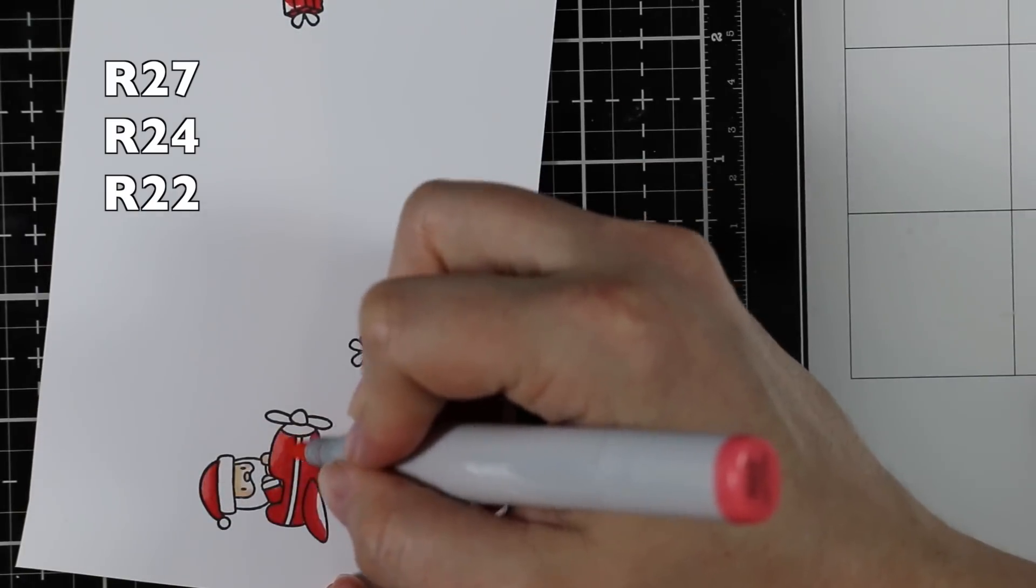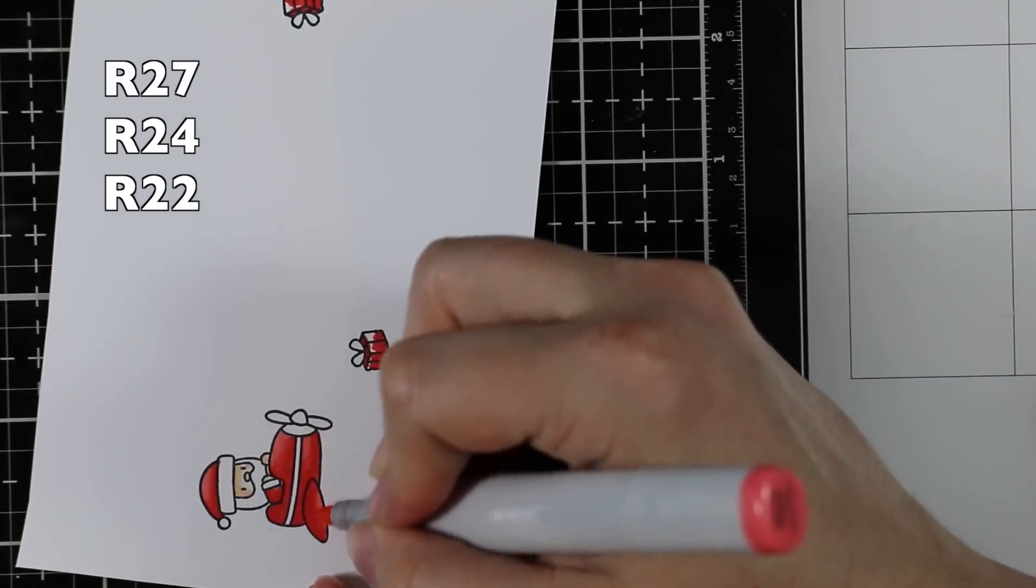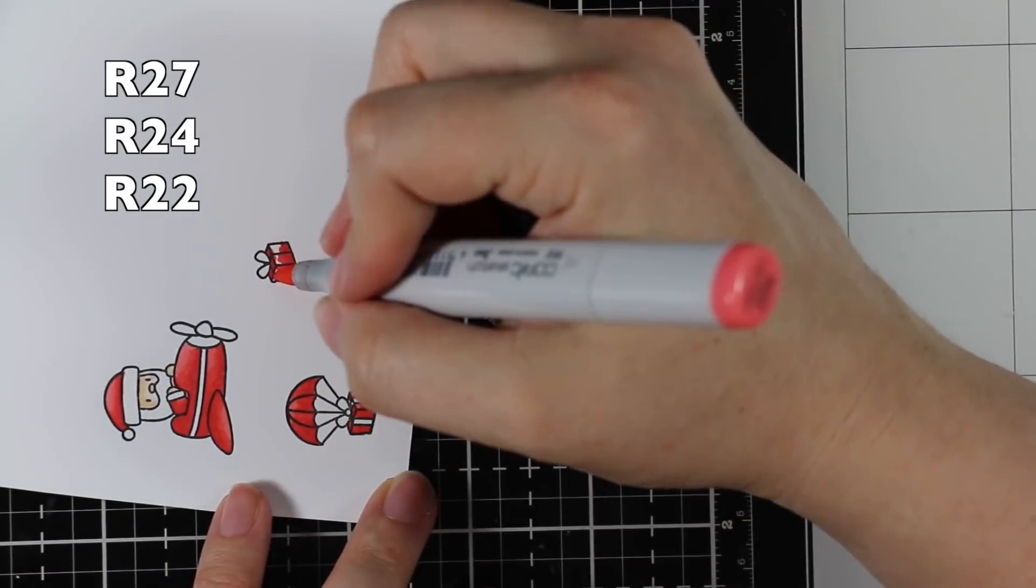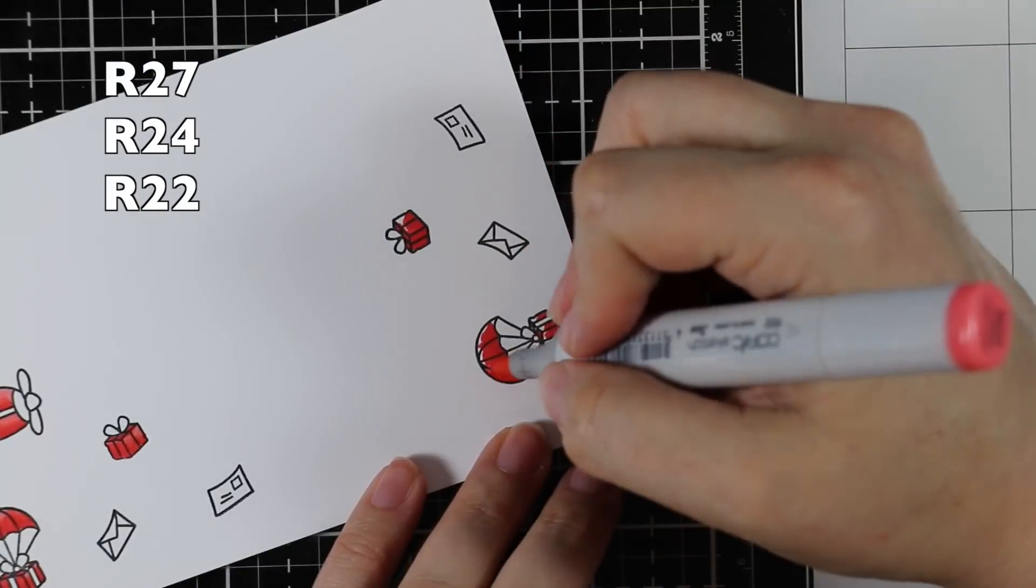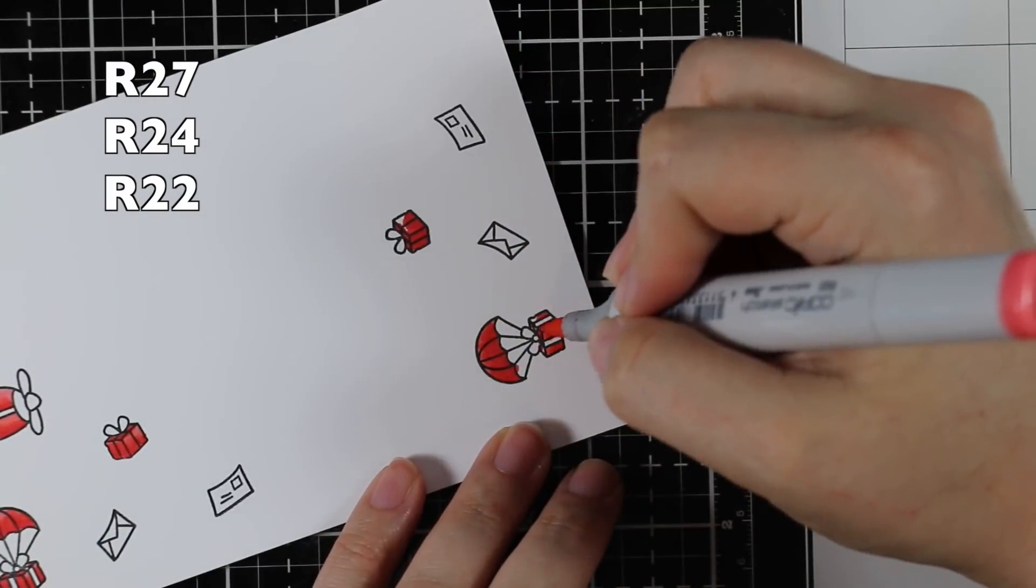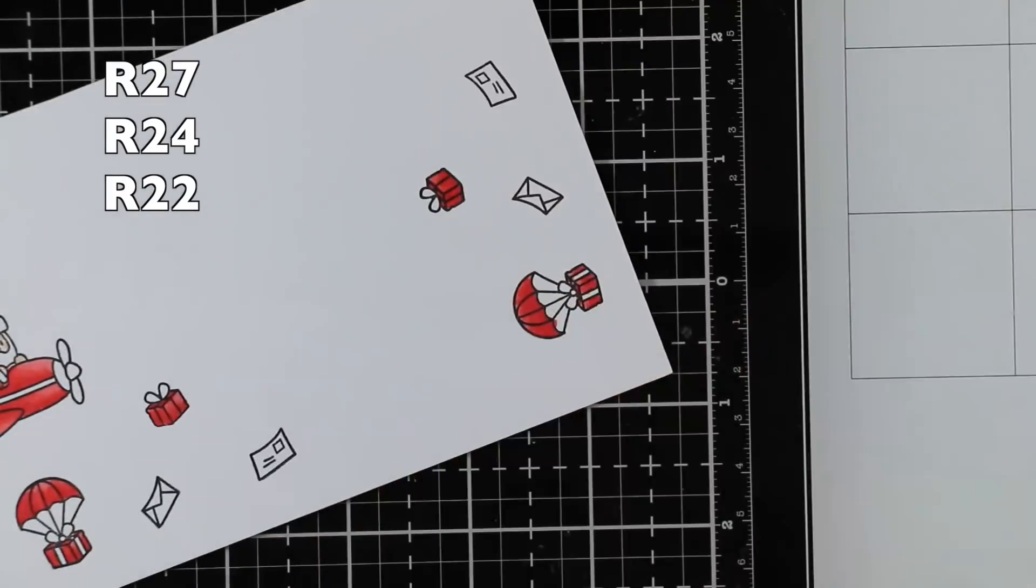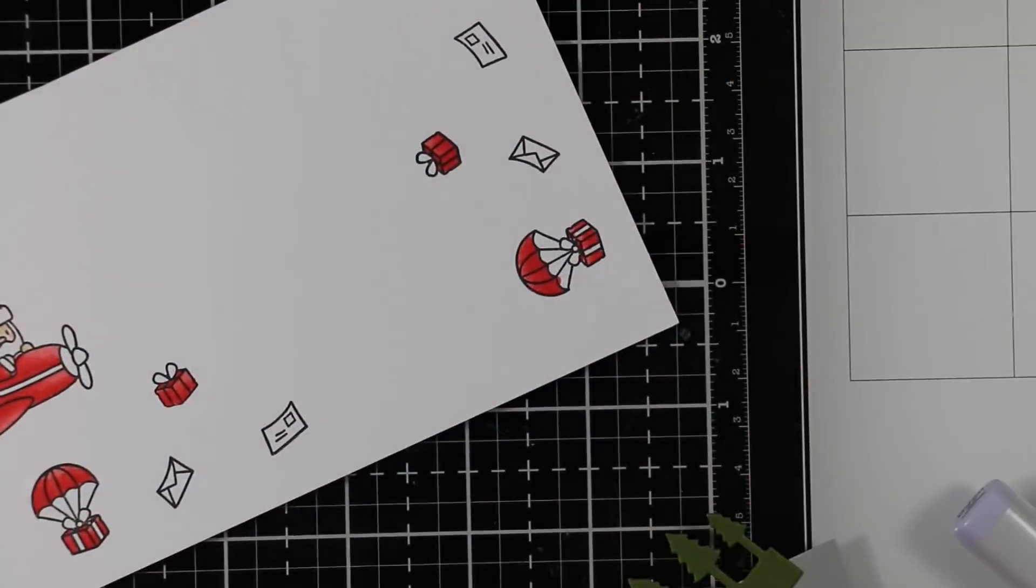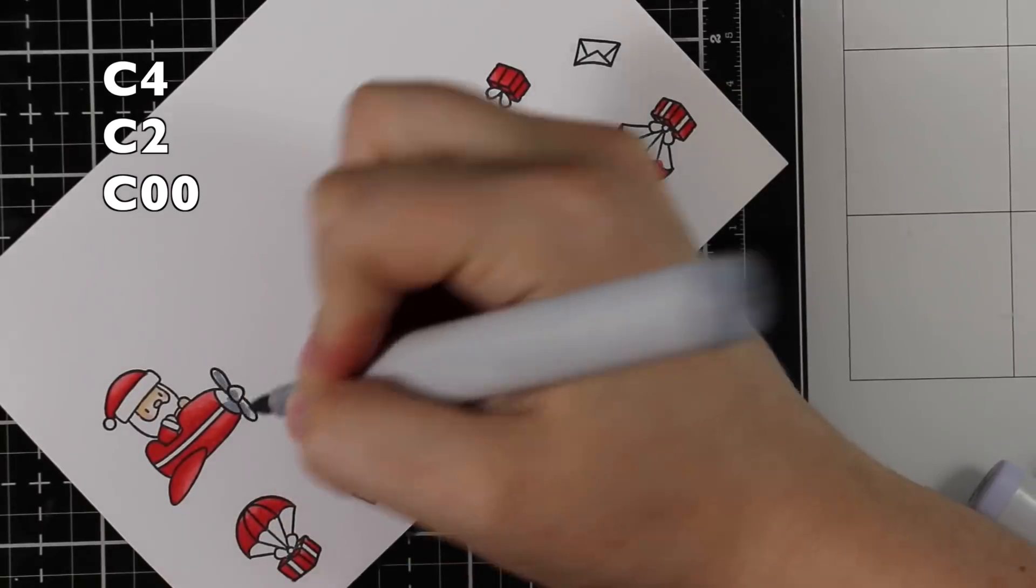I like that because when you have a lot of Christmas cards to make, I don't want to spend a ton of time. These are just cute, you add a little bit of color and you're good. I've listed the colors I used on the screen. I did everything pretty much in red and then added a bit of green.